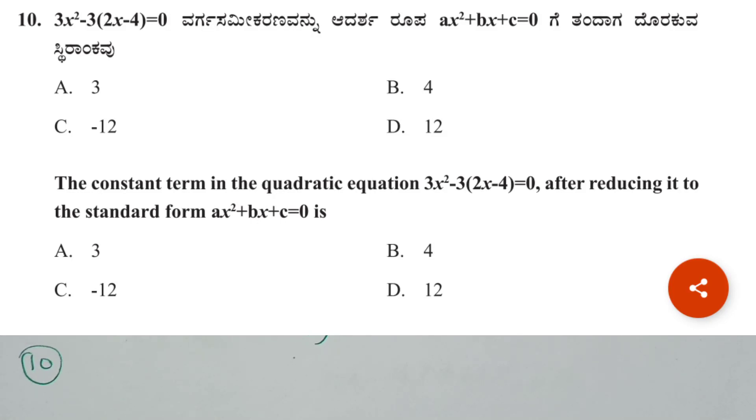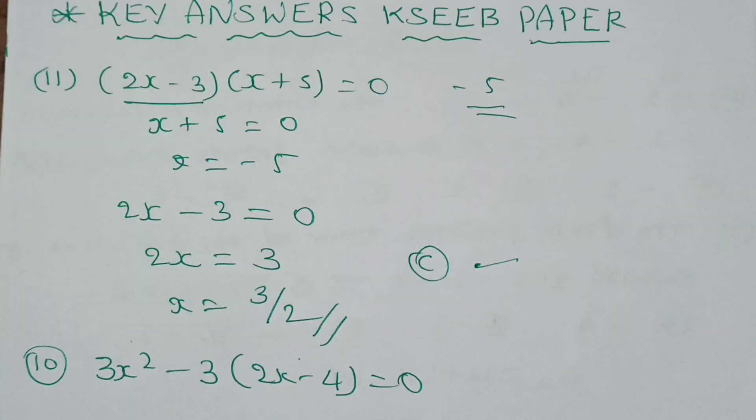Next, I'll take the tenth question. The equation is 3x squared minus 3 into 2x minus 4 equals to 0.